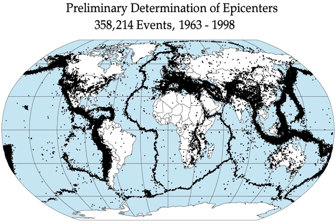While most earthquakes are caused by movement of the Earth's tectonic plates, human activity can also produce earthquakes. Four main activities contribute to this: storing large amounts of water behind a dam, possibly building an extremely heavy building, drilling and injecting liquid into wells, and coal mining and oil drilling. Perhaps the best known example is the 2008 Sichuan earthquake in China's Sichuan Province in May, which resulted in 69,227 fatalities and is the 19th deadliest earthquake of all time.